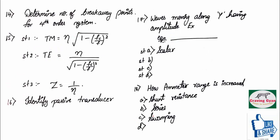Fourteenth question. You have to identify the number of breakpoints for a fourth order system. How you are going to find the breakpoint is, DK by DS, you have to equate to 0. And then you have to solve for the value of S.